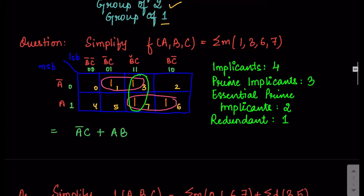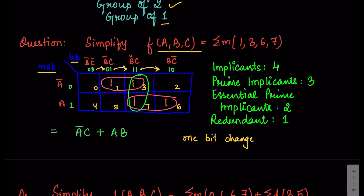Now let's start with another example. We have a three-variable function ABC which is sigma M of 1, 3, 6, and 7. We make 8 boxes. The MSB is A on one side and the LSB bits are B and C on the other side. Because you have two bits on the LSB side you will have four combinations, and these must be written so that moving from one to the next there is only one bit change — this is very important in k-maps, because we are looking for common variables.